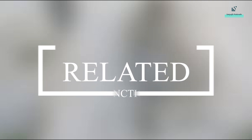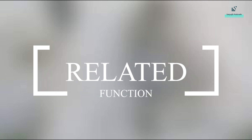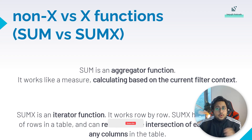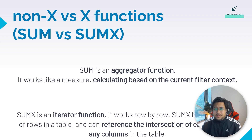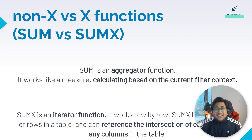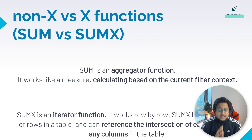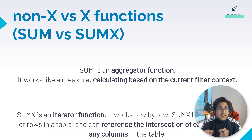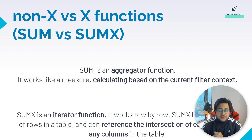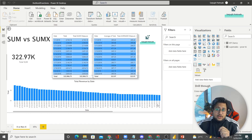Number two: X functions, which include SUMX, AVERAGEX, MINX, and MAXX. What exactly are X and non-X functions? Non-X functions are basically your SUM, AVERAGE, MIN, MAX and so on. Now we will be talking about the X functions. SUM is an aggregate function — an aggregator that works like a measure calculating based on the current filter context. But SUMX is an iterator function. It works row by row. SUMX has awareness of rows in a table and can reference the intersection of each row with any columns in the table.